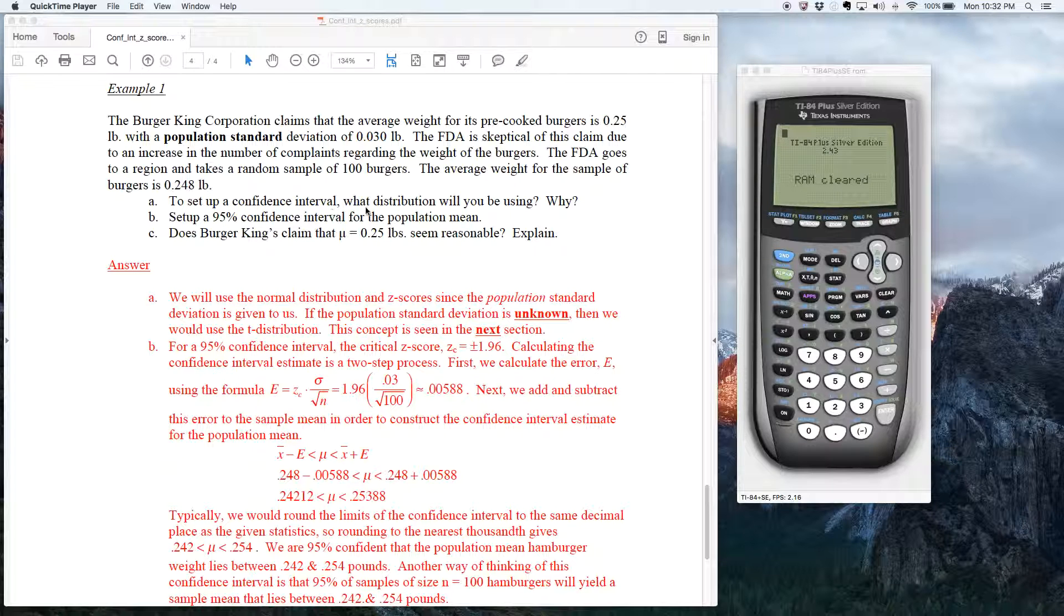To set up a confidence interval, what distribution will you be using and why? Notice how we are given the population standard deviation. Now, what other kind of standard deviation could you be given? Well, you could be given the standard deviation for the sample. In other words, these 100 hamburgers that they grabbed, they got a mean for those 100 hamburgers, and that's called x bar. But this standard deviation right here, in theory, is for all of the hamburgers that Burger King makes. It's a population standard deviation.